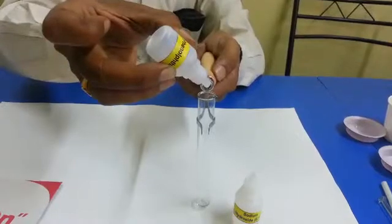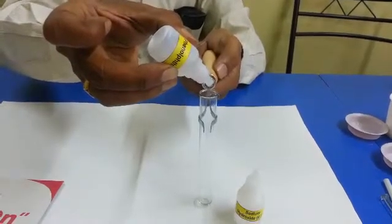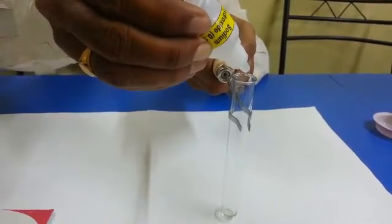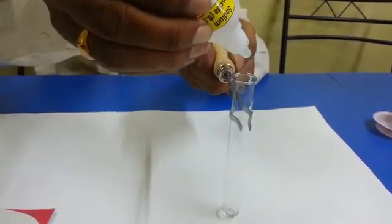Add one drop of phenolphthalein into hydrochloric acid. Now add NaOH solution drop by drop and count the number of drops.